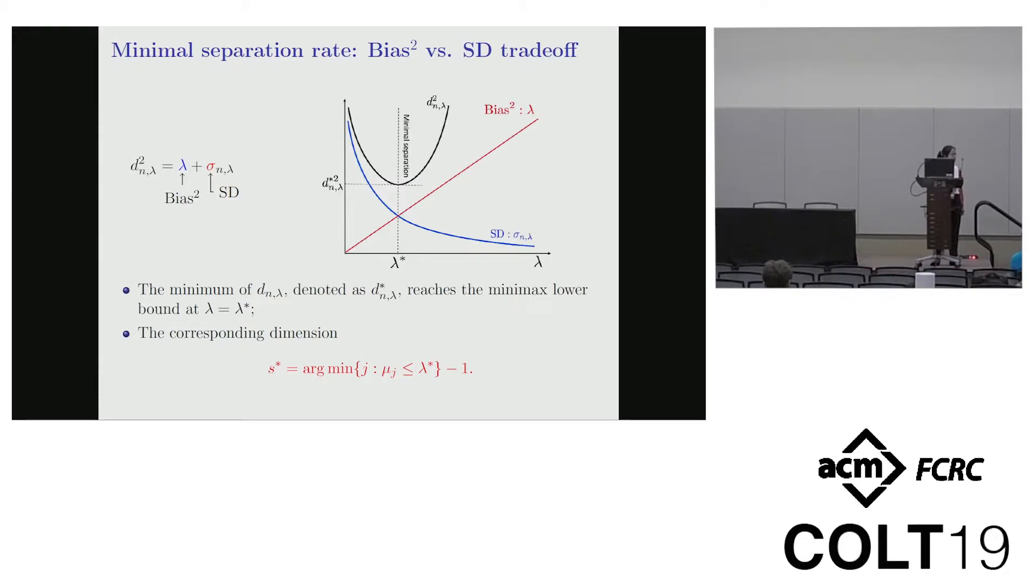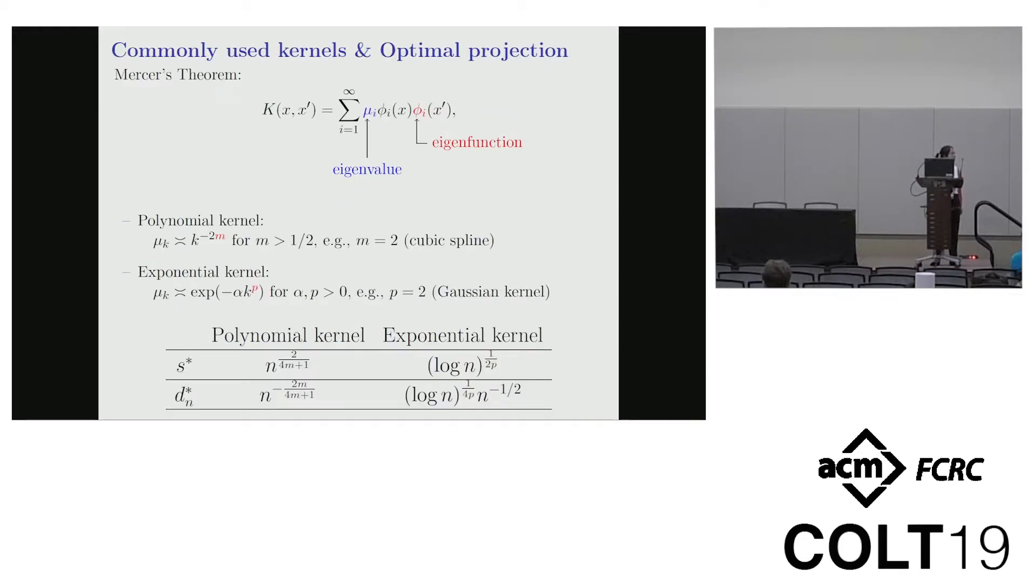Next, here are two concrete examples. For the polynomial decay kernel, we have S star looks like a polynomial order. And for the exponential decaying kernel, we have S star is log n order.